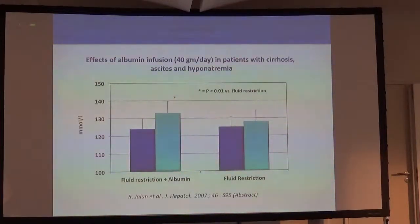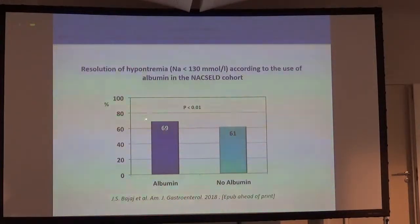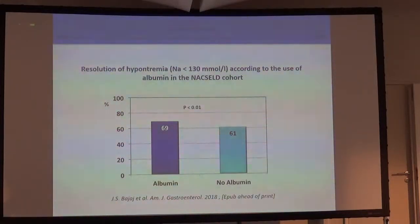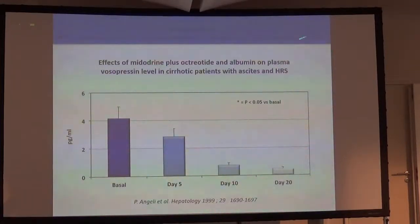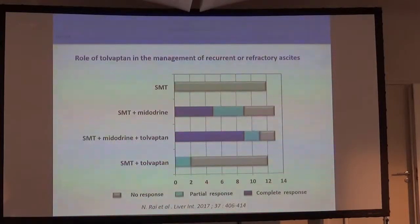What about albumin? We have one abstract showing albumin may be useful in treating hyponatremia in decompensated cirrhosis, and a retrospective study showing that patients treated with albumin during hospitalization had a higher probability of correcting hyponatremia. What about albumin plus vasoconstrictor? There is a strong rationale because we are improving effective circulating volume. Midodrine with albumin was capable of normalizing serum sodium and serum vasopressin levels, and midodrine is able to improve the treatment of refractory ascites in patients with cirrhosis.